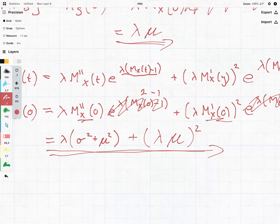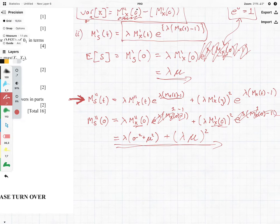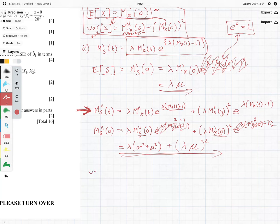So we have this, but this is not the answer. This is not the answer. Remember, the variance of S is equal to M''s(0) minus the first derivative squared,